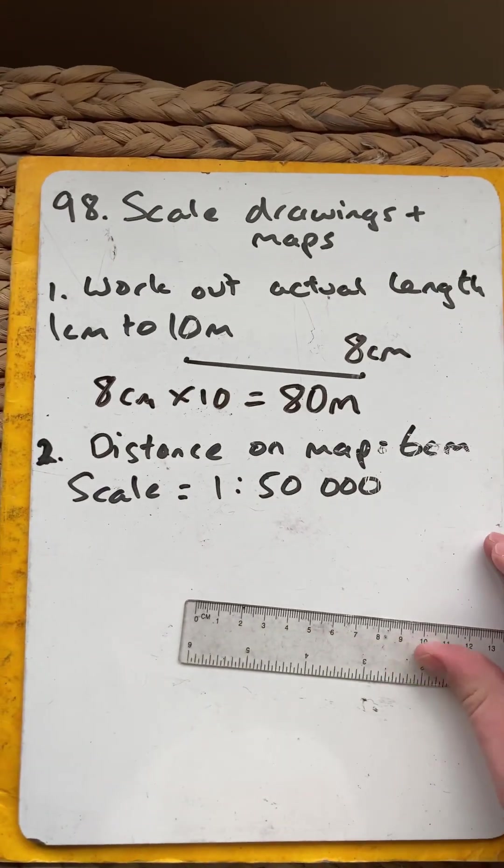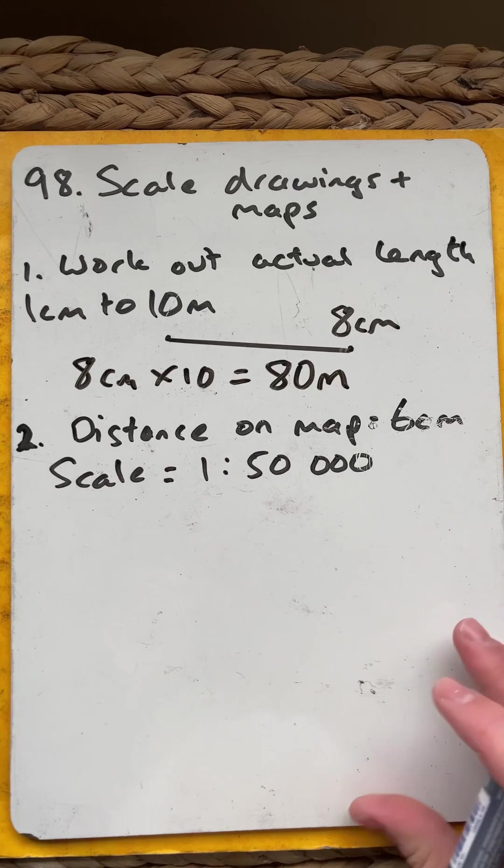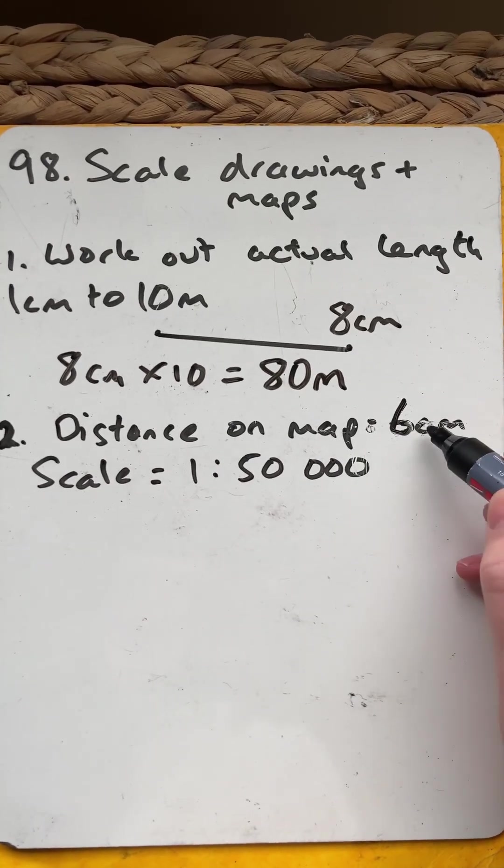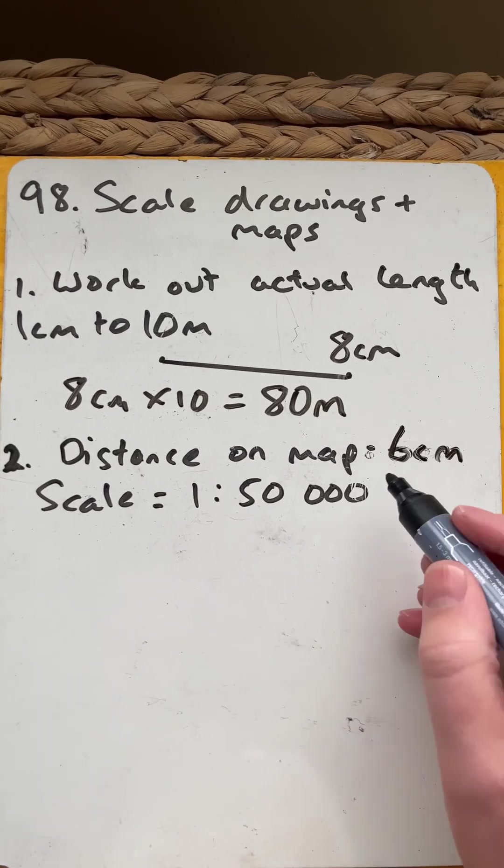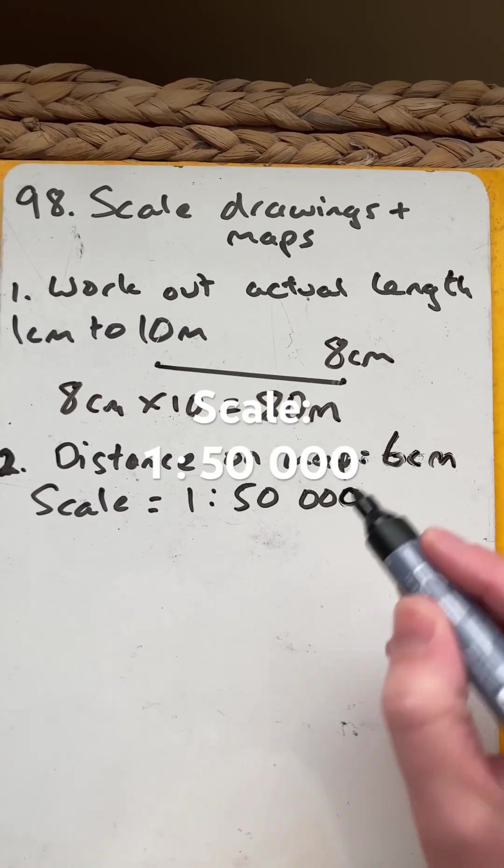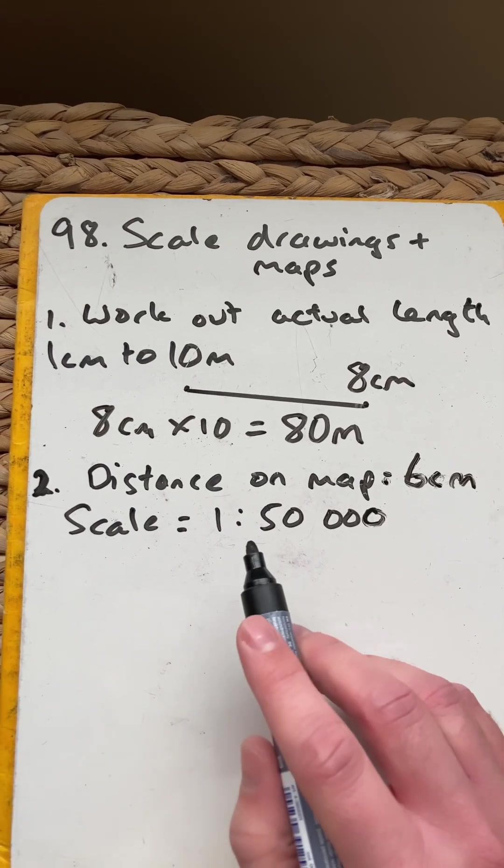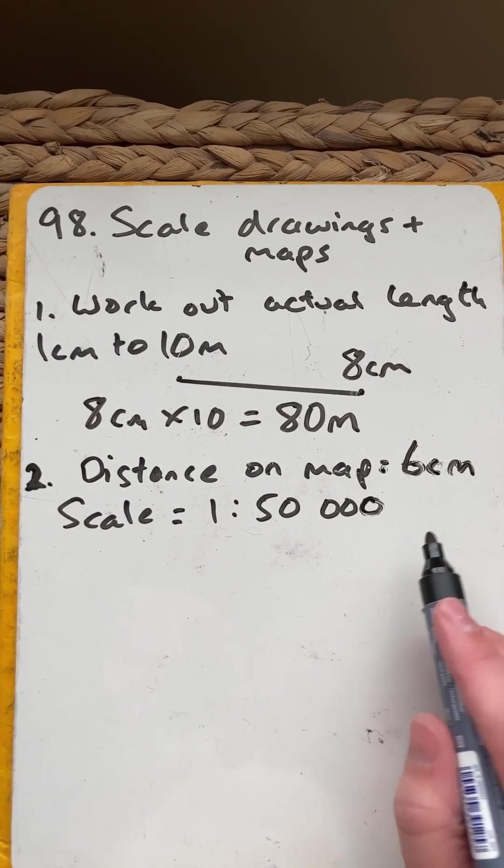Now if we have a much more scaled up map, this time every one is to 50,000. So the scale shows that one of anything, one centimetre, one thumbnail, is 50,000 of those in real life.